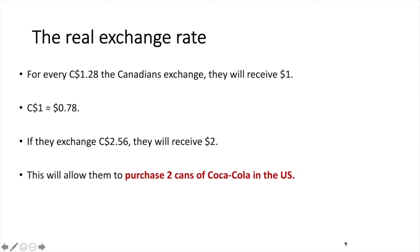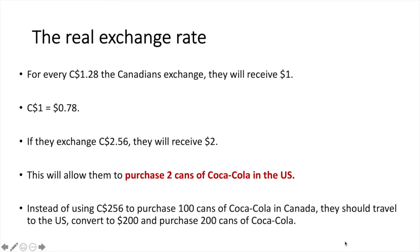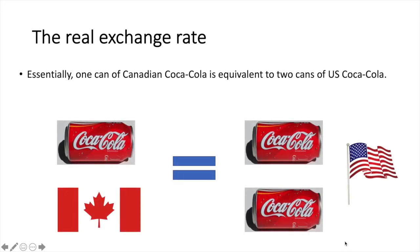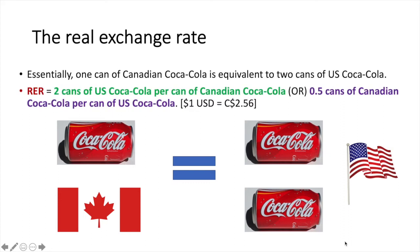This will allow Canadians to purchase 2 cans of Coca-Cola in the US. Another way to look at this is: instead of using C$256 to purchase 100 cans of Coca-Cola in Canada, they should travel to the US, convert to $200 USD, and purchase 200 cans of Coca-Cola there. Essentially, 1 can of Canadian Coca-Cola is equivalent to 2 cans of US Coca-Cola. The real exchange rate between the two countries is equal to 2 cans of US Coca-Cola per can of Canadian Coca-Cola, or 0.5 cans of Canadian Coca-Cola per can of US Coca-Cola.